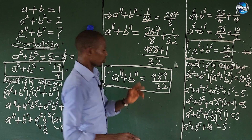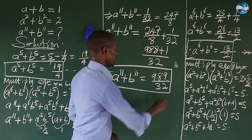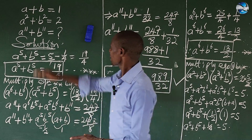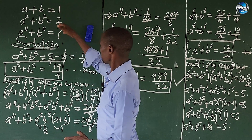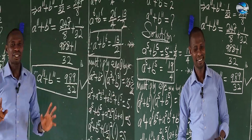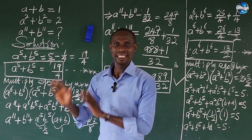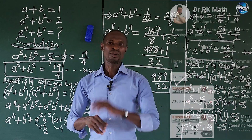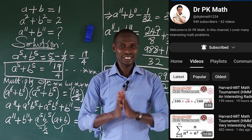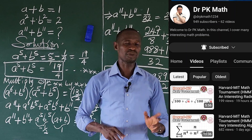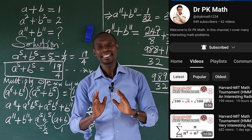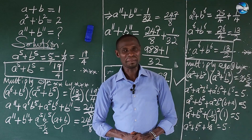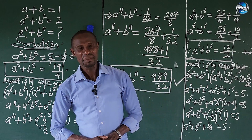So the value of a¹¹ + b¹¹ is 989/32. As I mentioned, trying to guess the pattern naively would give you the wrong answer. If you learned something from this video, please give it a thumbs up and do visit Dr. PK's channel for his approach. Subscribe to his channel. This is All I Must TV and my name is Jake Sanimo — I love you, bye for now.